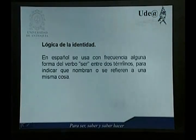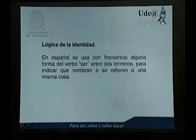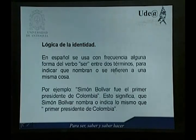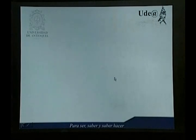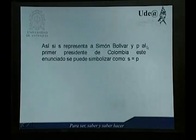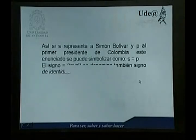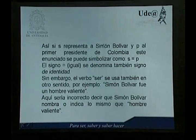Vamos a ver en qué consiste el concepto de lógica de la identidad, que es muy importante y completa el estudio del cálculo cuantificacional. En español se usa con frecuencia alguna forma del verbo ser entre dos términos para indicar que nombran o se refieren a una misma cosa. Por ejemplo, Simón Bolívar fue el primer presidente de Colombia significa que Simón Bolívar nombra o indica lo mismo que el primer presidente de Colombia. Así, si S representa a Simón Bolívar y P al primer presidente de Colombia, este enunciado se simboliza como S igual a P. El signo igual se denomina también signo de identidad, y aquí se está utilizando el verbo ser en el sentido de la identidad.